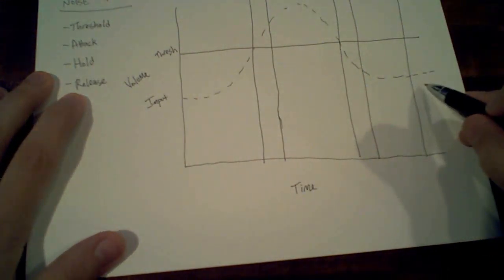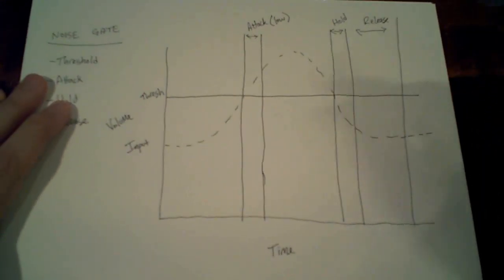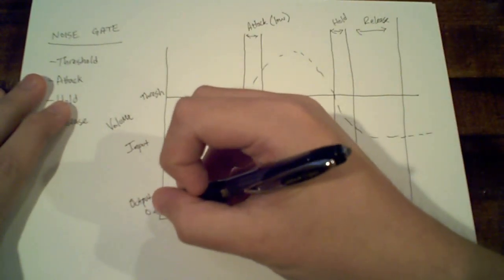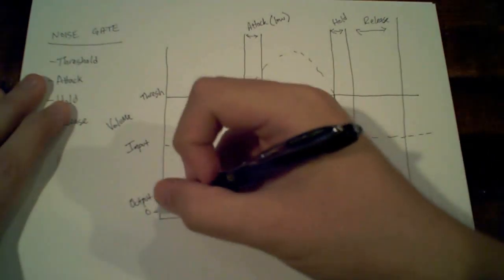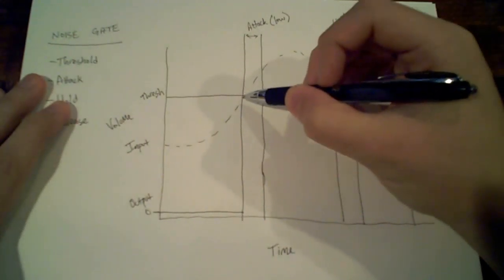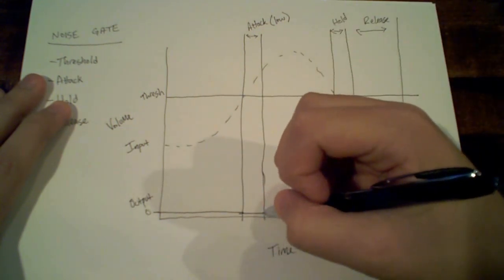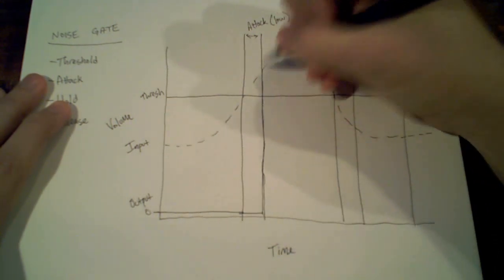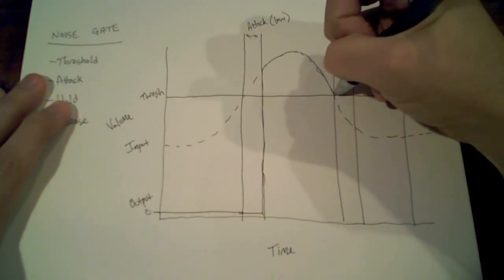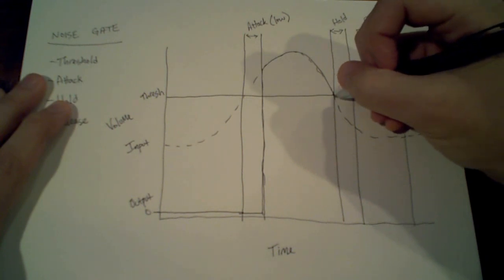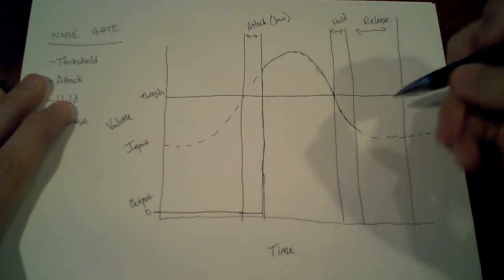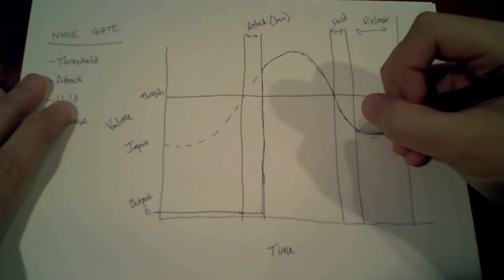After we've put all this in, our output signal is going to start at zero decibels. It's going to go and not actually kick in until the end of the attack time. Then it's going to mimic the original signal and keep mimicking it through the hold, and then during the release time go back down to zero.